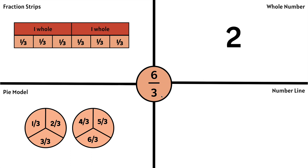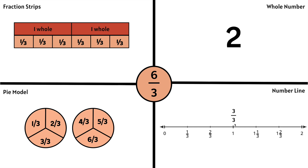Let's use a number line to show 6 thirds. This number line goes from 0 to 1 whole with 3 equal spaces between 0 and 1. Counting: 1 third, 2 thirds, 1 whole would be 3 thirds. If we add another third, we can say 1 whole and 1 third, or 4 thirds. Then 1 and 2 thirds, or 5 thirds. Then 2 wholes, or 6 thirds. So 6 thirds is the same thing as 2 wholes.